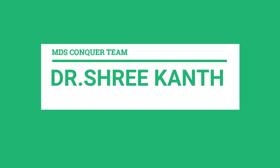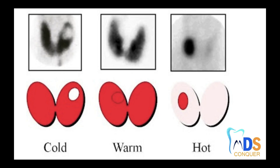Hi, this is Dr. Srikant from team MDS Conquer. I will be explaining different types of nodules that are seen in the thyroid gland. Scintigraphy is one of the modalities in identifying abnormalities in the thyroid gland, in which an isotope is given and multiple radiographs are taken, based upon which the nodule can be divided into hot, warm, and cold.